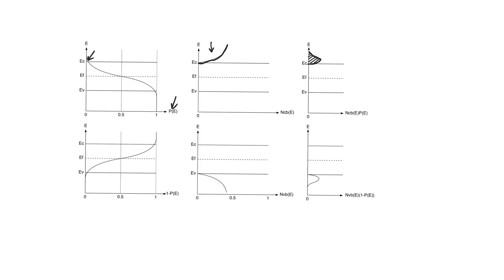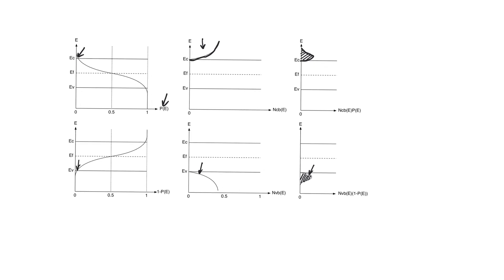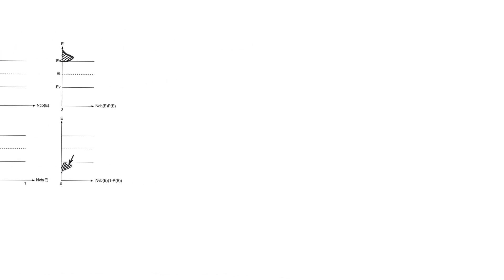Similarly, for holes, we multiply the density of states in the valence band by (1 - P(E)), because that's the probability that there are no electrons in the valence band. In the valence band, the interesting thing is that the absence of electrons — since the norm is that there are electrons — gives us the distribution of holes. Integrating this gives us the total concentration of holes in the material.